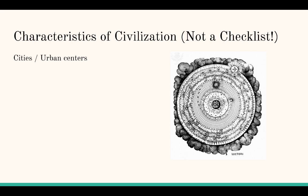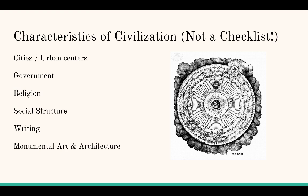The characteristics of civilization include: cities and urban centers, government, religion, social structure, writing, and monumental art and architecture. Of all of these, writing is the most controversial because not all civilizations develop it. Some people say if you don't have writing, you're not really a civilization — but we don't want that attitude. Instead, we look at record keeping: maintained through writing, oral tradition, or systems like the Inca quipu, which used knotted strings and cords to record data and information.